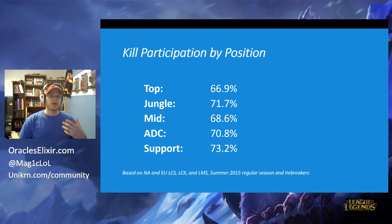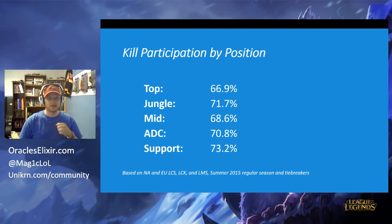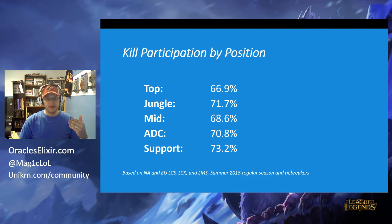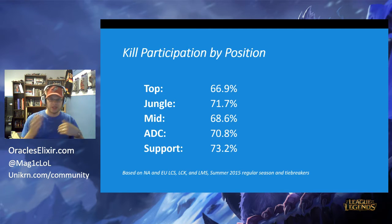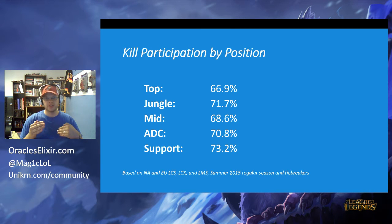First, let's look at some standard kill participations by position, because it varies a lot based on what role you're playing. This is based on regular season and tiebreaker data from North America, Europe, Korea, and Taiwan — data from China is not available as they don't release it. On average, top laners have the lowest kill participation, and supports have the most, as supports are often in the middle of team fights healing, shielding, or crowd controlling. Within each role, there's usually a range of about 10 to 12%, with top laners generally falling between the low 60s and low 70s, and supports between the high 60s and high 70s.